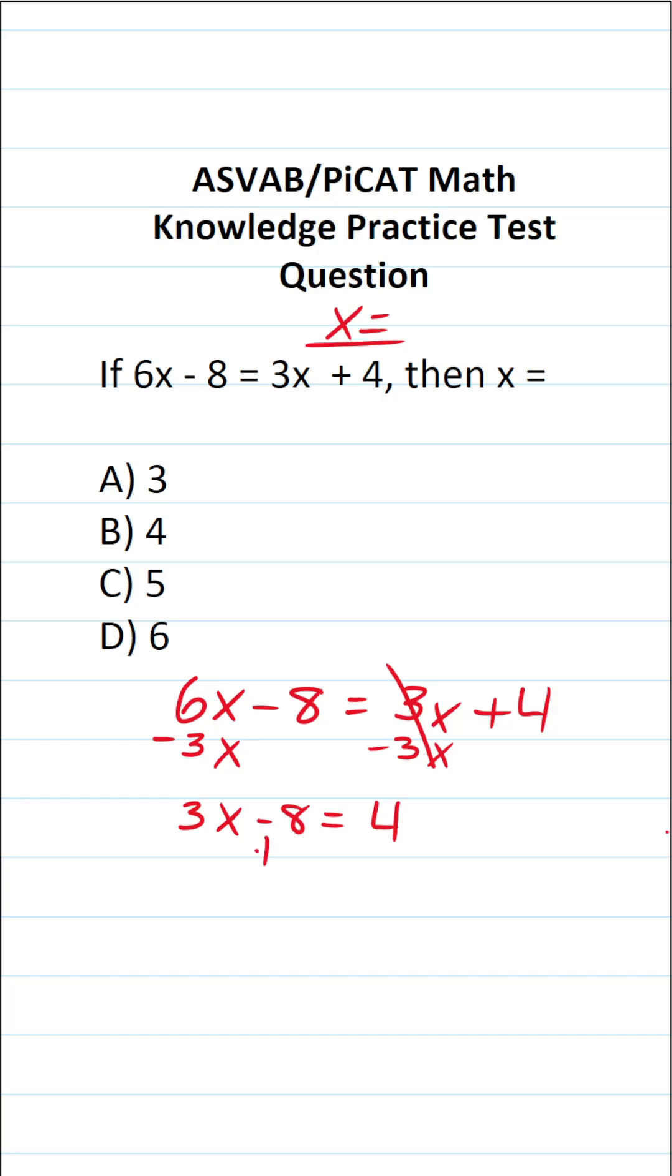The next thing I'm going to do is add 8 to the other side of the equation. In doing so, this crosses out, leaving me with 3x over here. 4 plus 8 is 12.